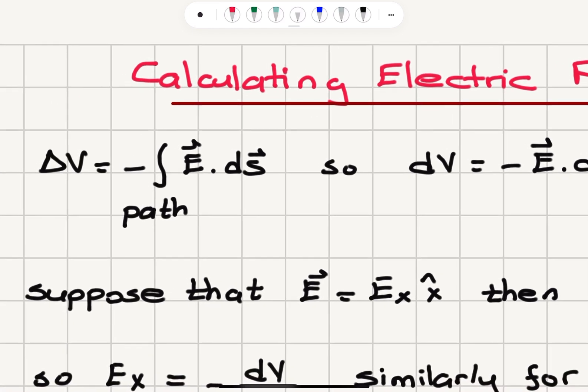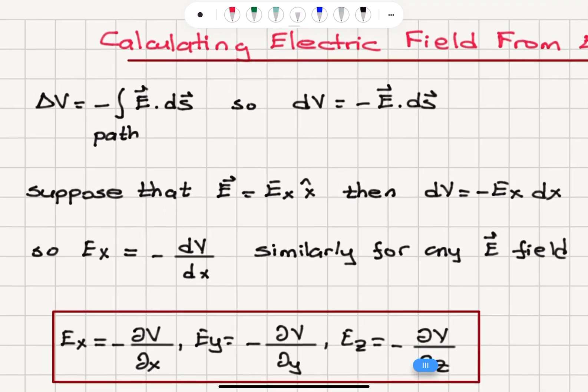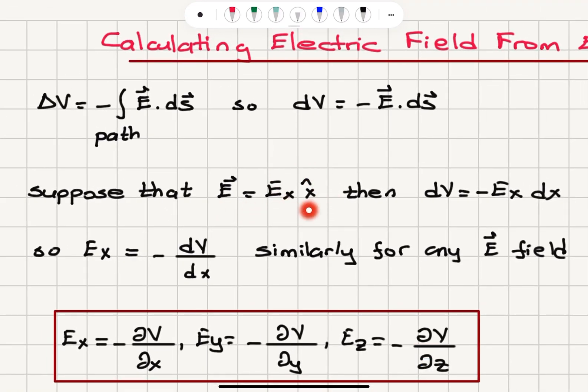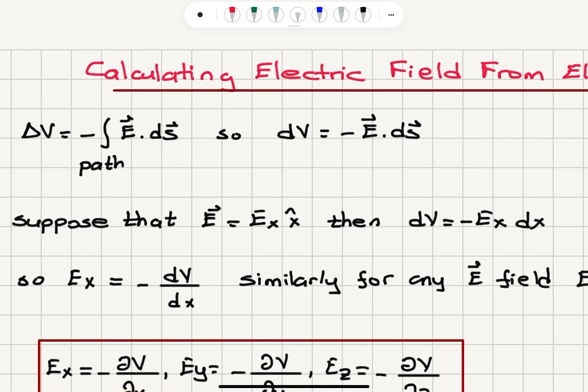Let's say that electric field is on the x-axis. It has a magnitude Ex in x-hat direction or i-hat direction. Then what would this become? We would have dV is equal to minus Ex dx when we move on the x-axis from one point on the x-axis to another point or the x-component of the displacement vector.